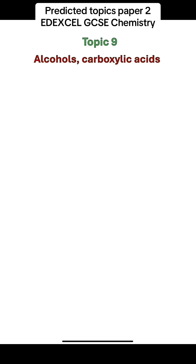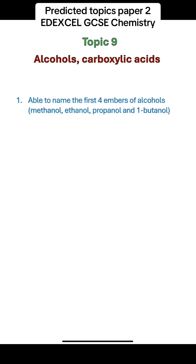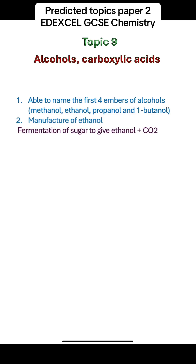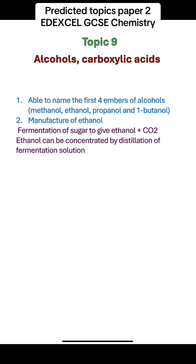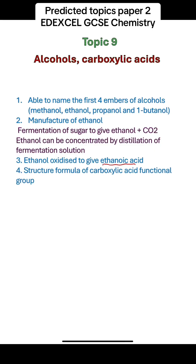Alcohols and carboxylic acids. You should be able to name the first four members of the alcohol homologous series: methanol, ethanol, propanol, and 1-butanol. You should know how to manufacture ethanol through the fermentation of sugars to give ethanol and carbon dioxide. Ethanol can be concentrated from the fermentation mixture by fractional distillation. Ethanol is oxidised to give ethanoic acid, which is the carboxylic acid of ethanol, and you should be able to deduce the oxidised product of any of the first four alcohols.